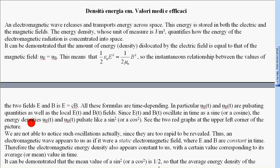...the energy densities UE(t) and UB(t) pulsate like a sine squared or a cosine squared. See the two red graphs at the upper left corner of the picture.